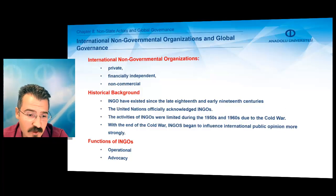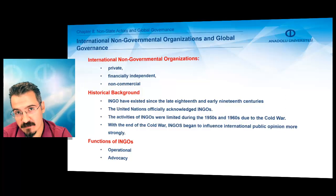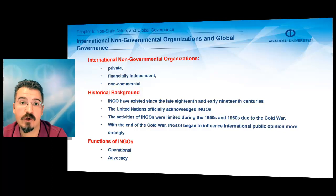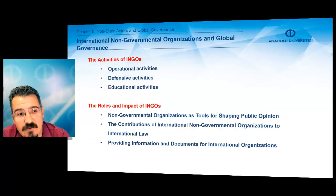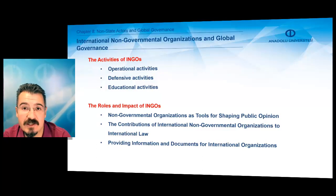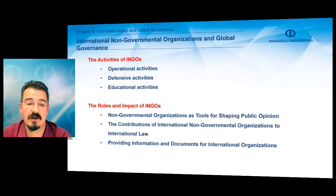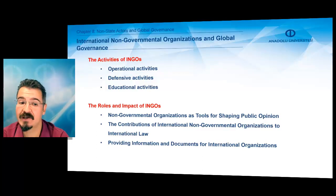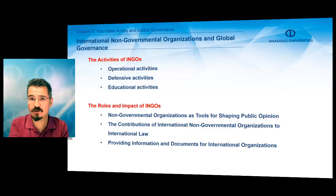International NGOs have two basic functions. The first is operational functions — they carry on operational activities in different countries. The second is an advocacy function, where they promote causes such as human rights and environmental issues. Some organizations like Oxfam focus purely on operational activities to help people in less developed countries, while others carry on defensive or educational activities. There are different types of international NGOs carrying on different types of activities.